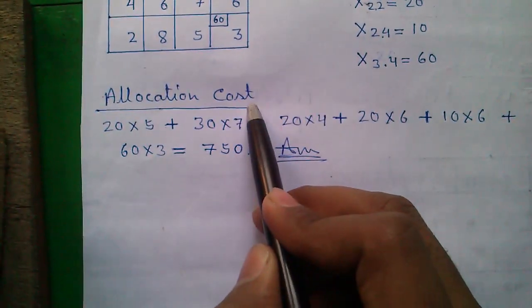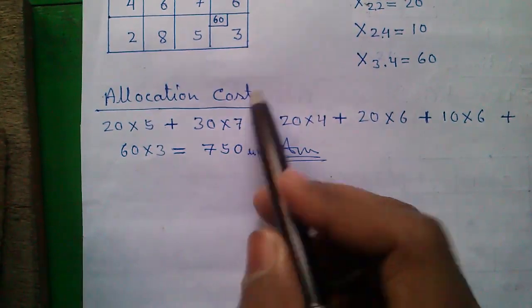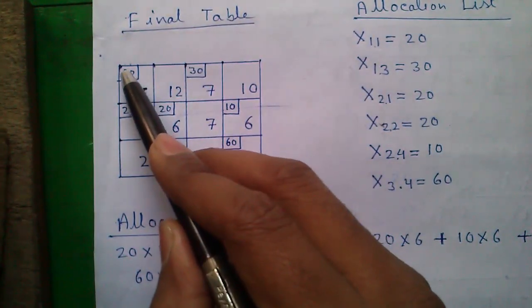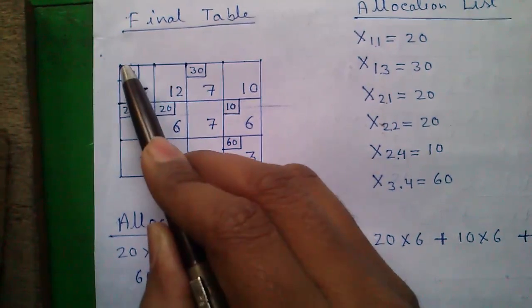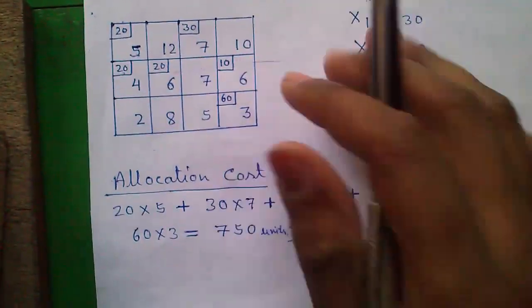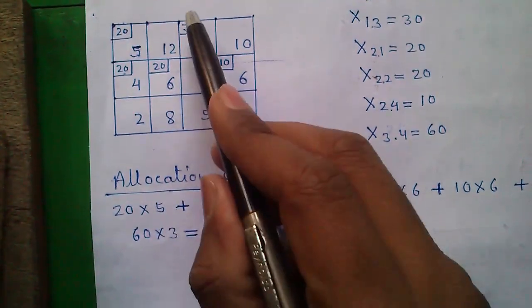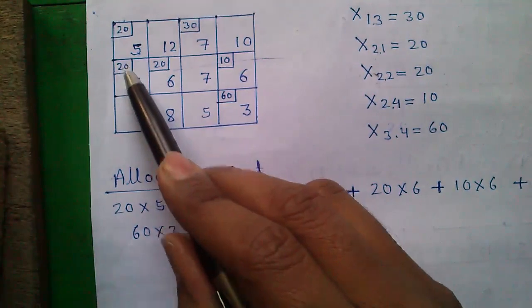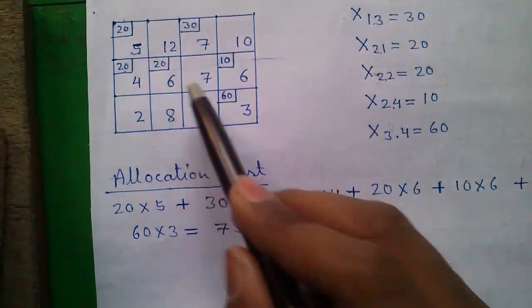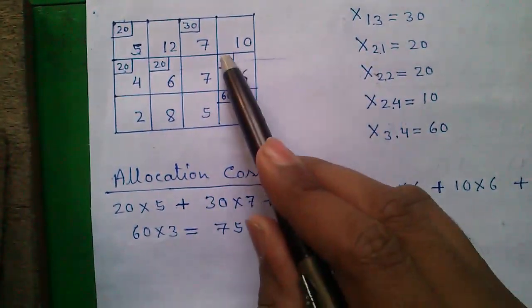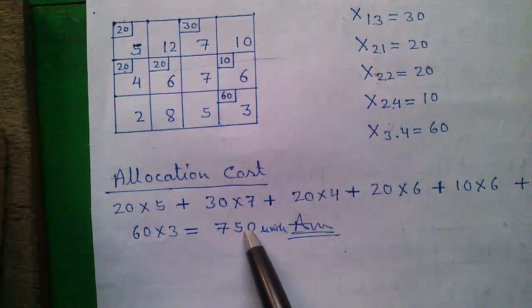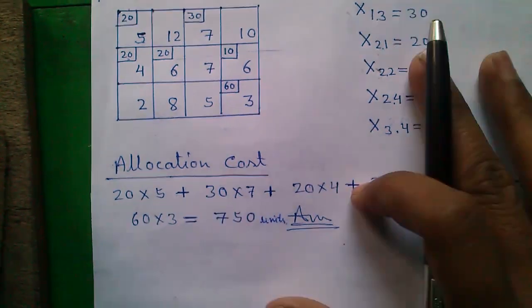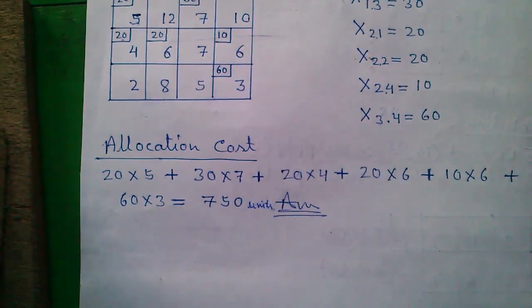Our final step is finding the total allocation cost. We calculate: 20×5 + 30×7 + 20×4 + 20×6 + 10×6 + 60×3. This sums up to the total allocation cost, which is our answer.